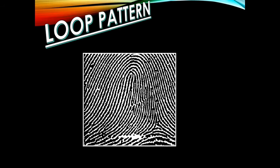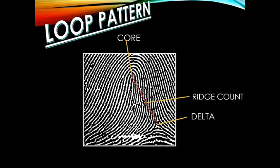Moving on, this is another example. The elements of a loop pattern are: first, we have here the delta and the core; then, followed by the ridge count — in here we have 14 ridge count, counting 14 intervening ridges when we draw this red line; and the last element is it must have a sufficient recurve wherein it must be free from any appendage or it must not be spoiled.